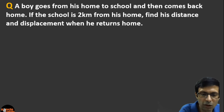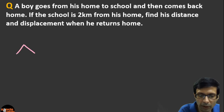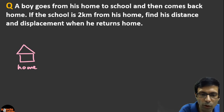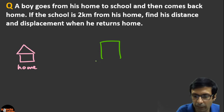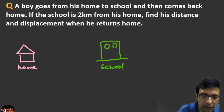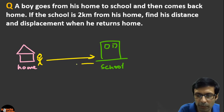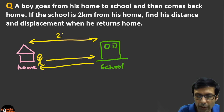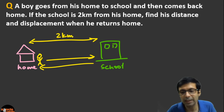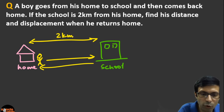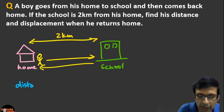Here's a question for you: a boy goes from home to school and back. The school is 2 kilometers from his home. Find the distance and displacement when he returns home.